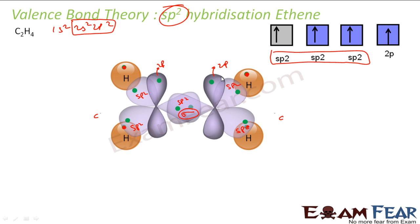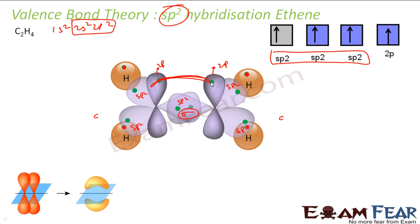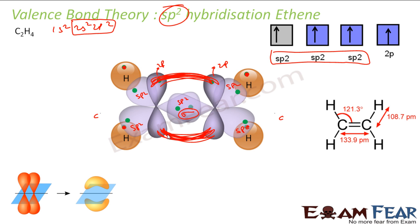The two remaining 2p orbitals — one from each carbon — form a pi bond, because they overlap sideways, not head to head. This is one pi bond between the two carbons. So in ethene, all the C-H and C-C sigma bonds are formed by head-on overlap of s and sp2 orbitals, and there is one pi bond. Ethene is fully sp2 hybridized.